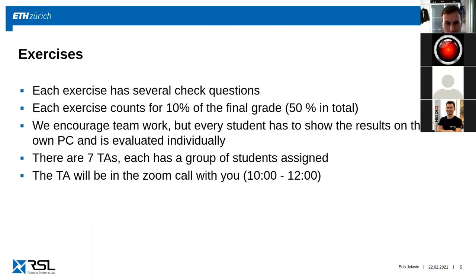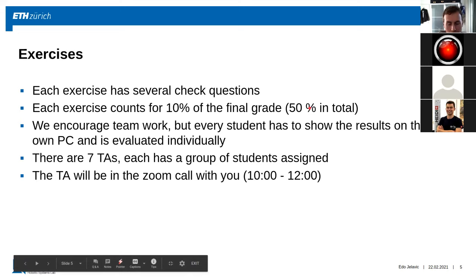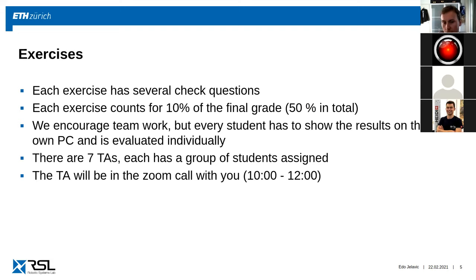Each exercise has several questions where you can get points from zero to 100%, and exercises in total count for 50% of the grade. You can work together - we encourage you to work together. However, at the end, before you call the TA to evaluate your exercise, each of you should show results individually on their own PC. There are seven TAs and each has a group of students assigned. The assignment sheet is posted on Piazza with your student ID numbers and the corresponding group number.